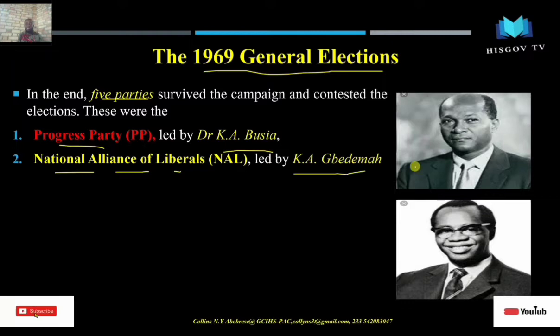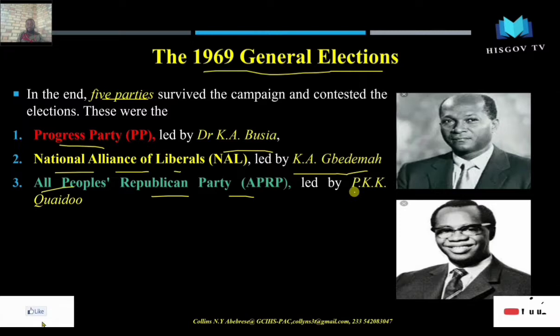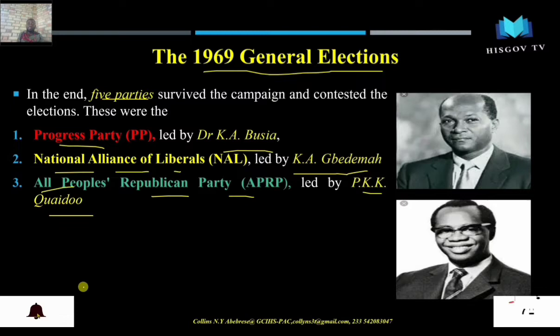The next political party was the National Alliance of Liberals, led by K.A. Gbedemah. Gbedemah was a CPP member who campaigned for Nkrumah to win the 1951 election and also served as Finance Minister. We also had the All People's Republican Party led by P.K.K. Quaidoo, who was a Minister of Education and Labor and also a CPP member.